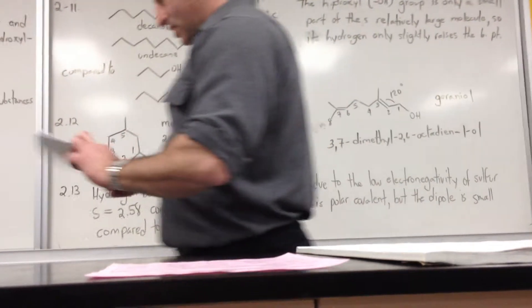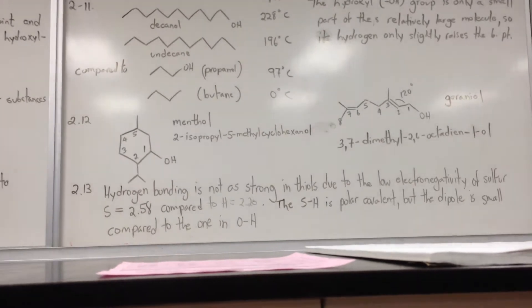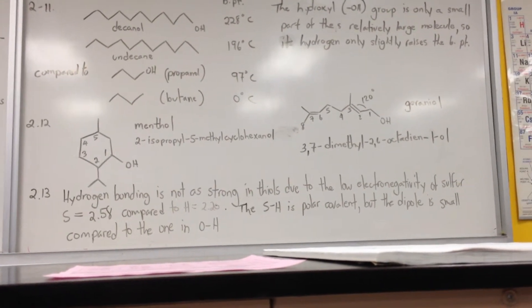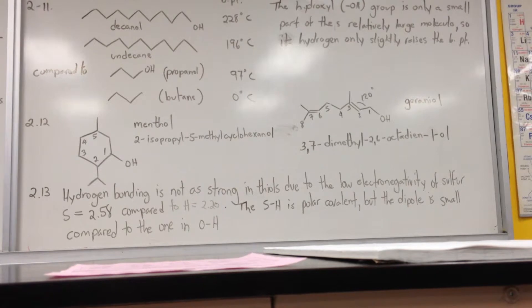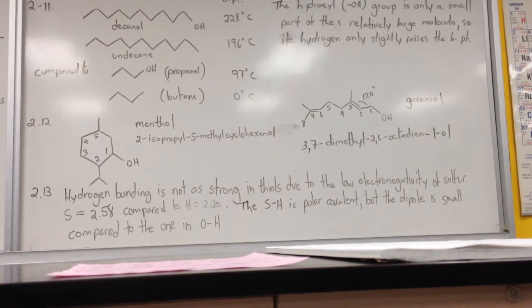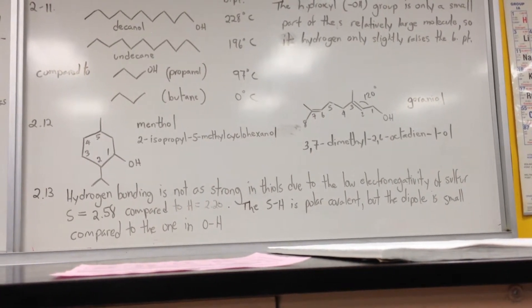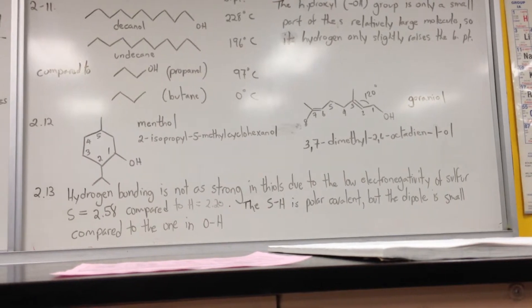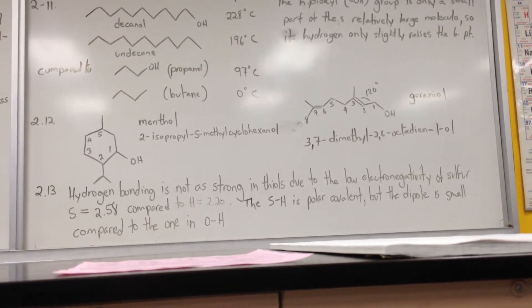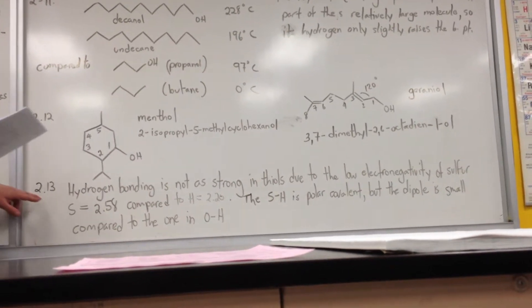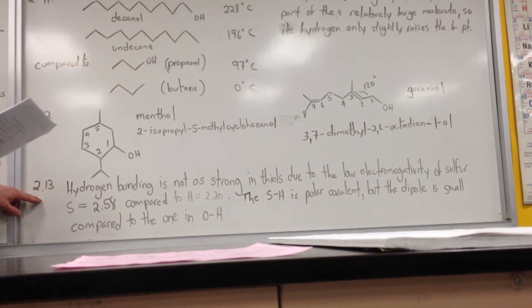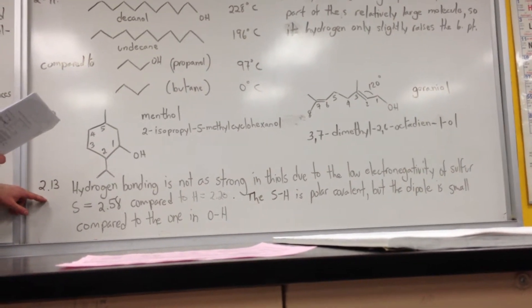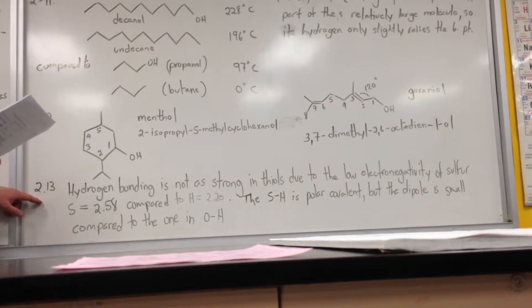Now question 2-13 deals with thiols, which are the analogous molecules to alcohols, except with sulfur as the hetero-atom and not oxygen. So 2-14 is actually about hydrogen bonding. What do the boiling points of low molecular weight thiols suggest about the importance of hydrogen bonding in those compounds?